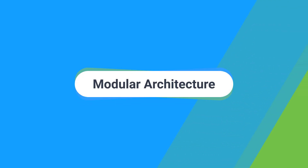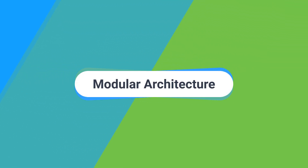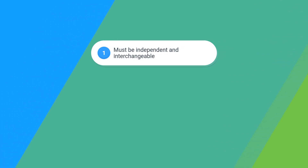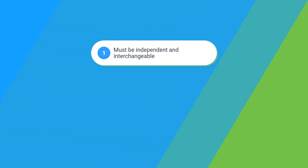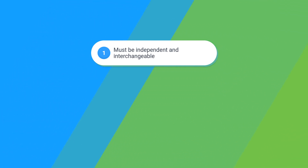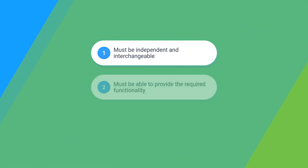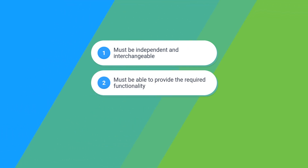Modular monoliths introduce a few important technical challenges that we will need to solve. To achieve a modular architecture, the modules must be independent and interchangeable, must be able to provide the required functionality, and must have a well-defined interface exposed to other modules.